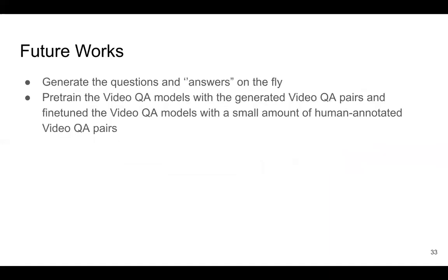For future work: our model only generates questions, but to create a complete video QA dataset, we also need to generate answers. By providing answer information, we can generate more corresponding questions. Once we can generate both questions and answers, we can produce a large-scale video QA dataset. As a second future direction, we can pre-train video QA models with our generated dataset and then fine-tune with a small amount of human-annotated pairs, requiring less human effort and less money, making the research more affordable.